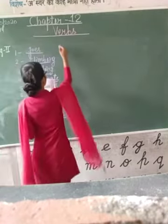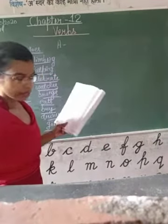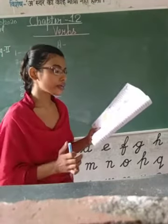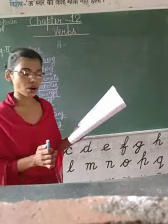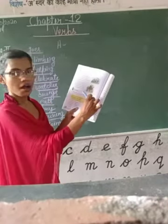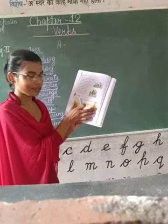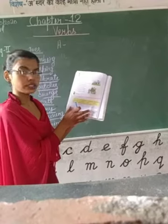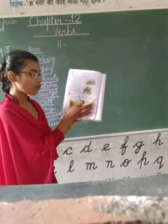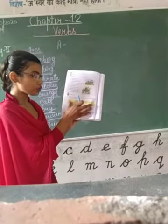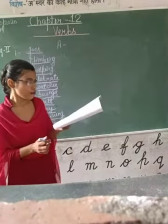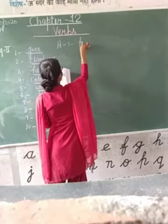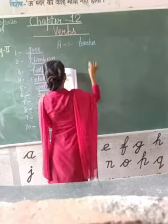Now, next question, question number eight: what do these people do? Can you find out their occupations from the words in the box? You have been given a box with some occupations. You have been given some nouns, some persons, and you have to find out what these people do by searching from the box. Let's start. First: our teacher teaches us.